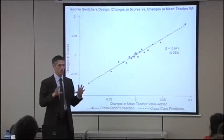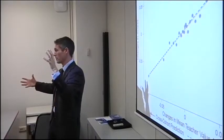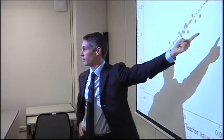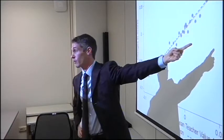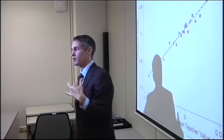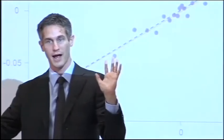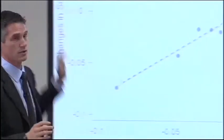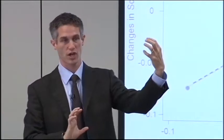This is not using classrooms, this is just using whole cohorts. We get a relationship which is incredibly similar to that first relationship I showed you based on classrooms — 0.84. So not using the classroom links, just using the cohorts, I get a very similar relationship between value added and test scores. No control variables, nothing, just changes in time across cohorts.